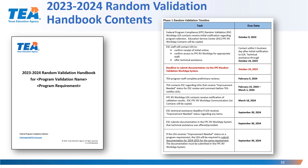The final page of the handbook contains the Phase 1 random validation timeline. This is for the LEA's reference so that they can see all the dates that are associated with the Phase 1 random validation process.